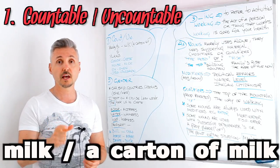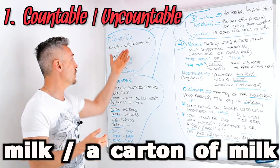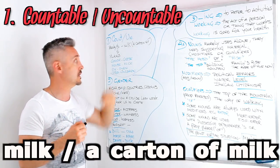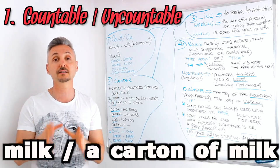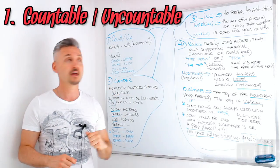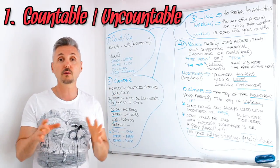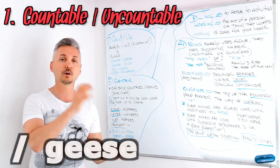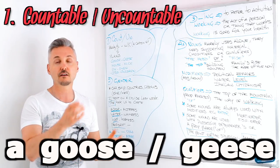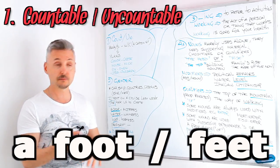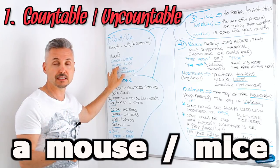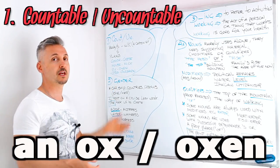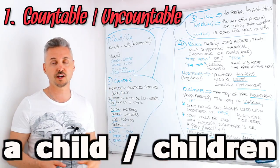If you want to count milk, you need a partitive. A partitive is like the word 'carton' — for example, 'a carton of milk.' If you want to watch a lesson on partitives, you may click here. The plural is usually made with an S at the end, but not always. For example: goose/geese, foot/feet, mouse/mice, ox/oxen, child/children, and so on. There are many exceptions.